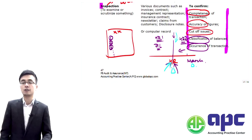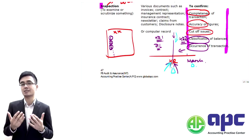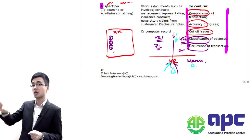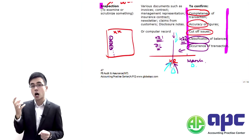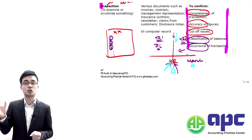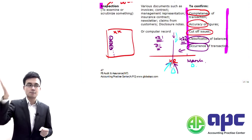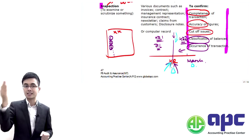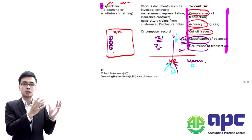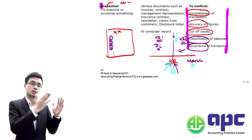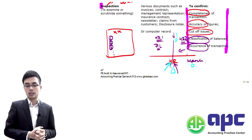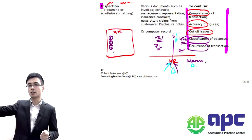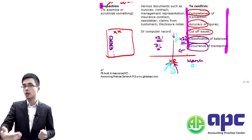We confirm the occurrence of transactions — meaning the transaction actually took place. For example, if financial statements show inventory of $30 for item A, we chase that back to the warehouse to confirm item A worth $30 actually exists physically there. We take the figures from the financial statements back to real life — that's testing occurrence. We'll detail this when we come to it.